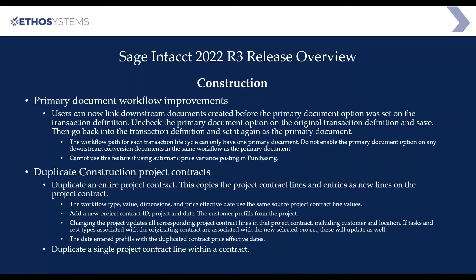Within construction, you will see a new function called Primary Document Workflow. It's a way for you to see which is the originating document — very useful for commitments such as purchase orders and subcontract documents. You would then be able to see how those original items link up to change orders and the subsequent vendor invoices. Once activated, this will go back to all your previous subcommitment documents and link up all invoices and change orders related to those.